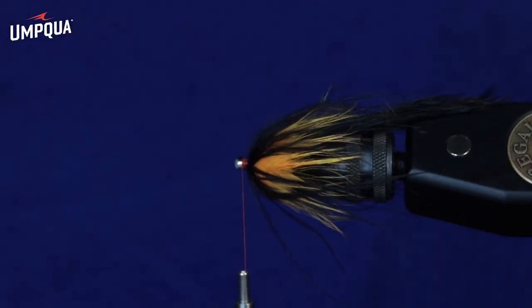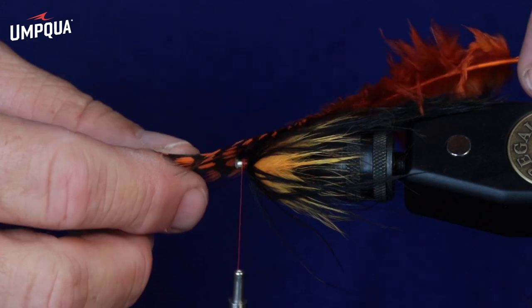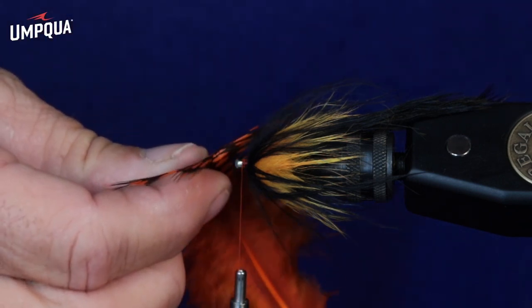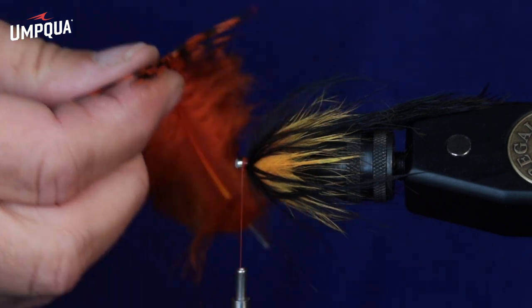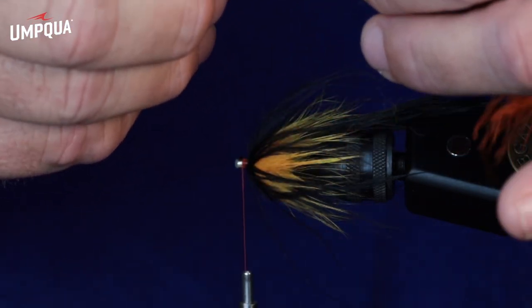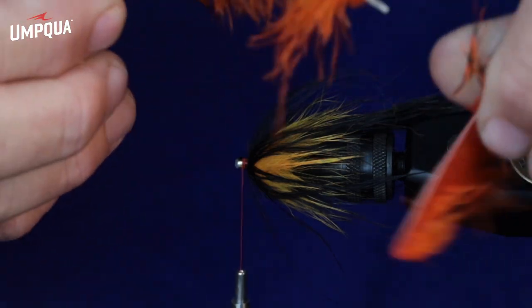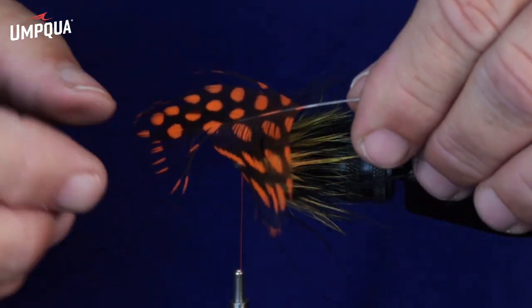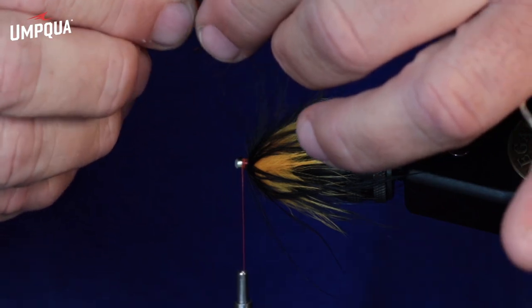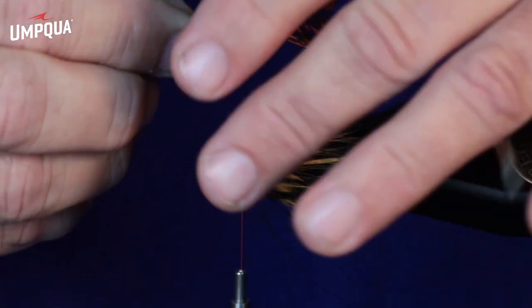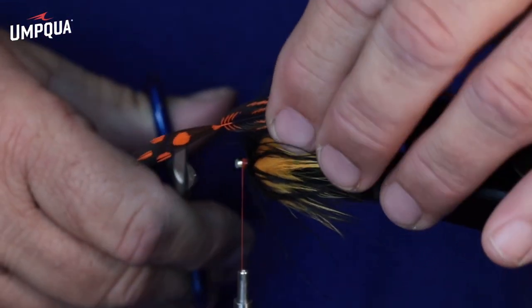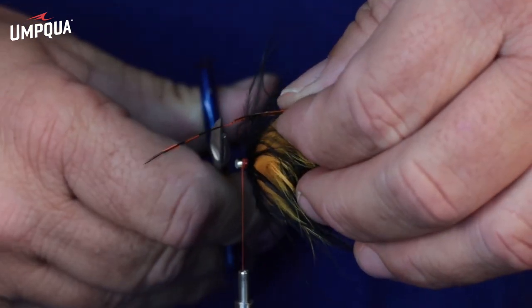Alright, so moving along, we've got our rabbit and our marabou on now, and now we're just going to add a collar of guinea, and I'll take this guinea feather, and what I'm looking for is I'm just kind of gauge it to length, and I want it to be a little less than half flowing backwards. And I'll strip the stem clean. And then I'll pull the barbs back, like that, and then that leaves that tip shown, and then I'll just clip that tip into a small wedge.